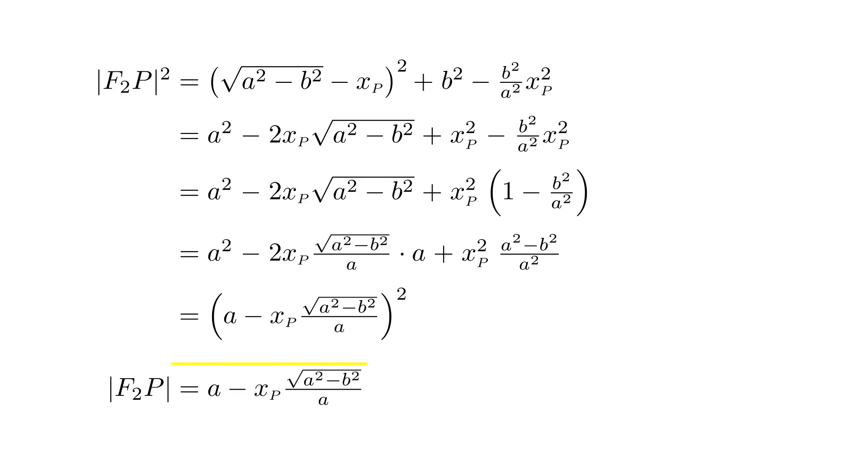Following the same steps as before, we get that |F2P| is equal to a minus xP times the square root of a squared minus b squared over a.